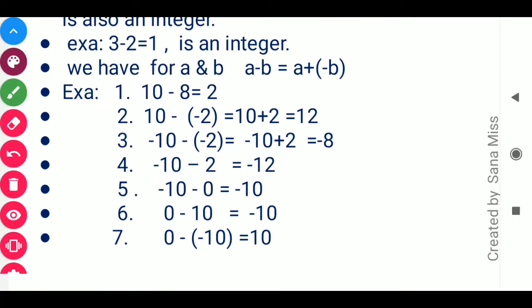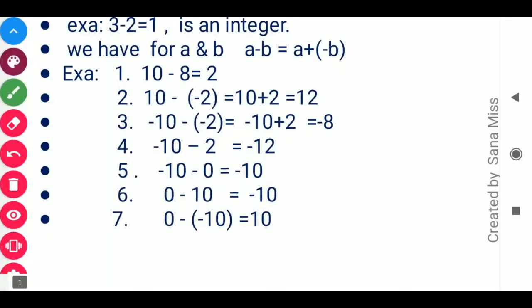Example 5: subtracting 0 from minus 10 means subtracting nothing, so minus 10 remains as it is. Example 6: subtracting 10 from 0 — the sign goes up and it becomes minus 10. Example 7: subtracting minus 10 from 0 — there is a minus sign outside the bracket, so minus times minus becomes plus, giving positive 10.